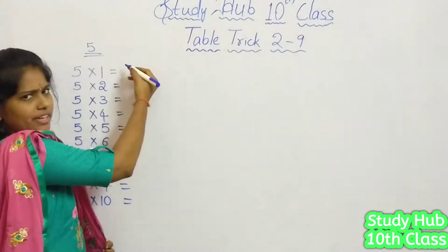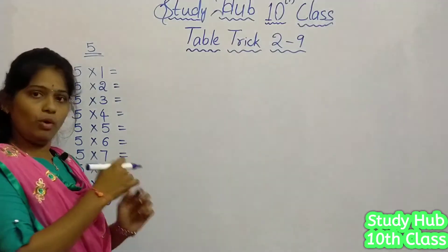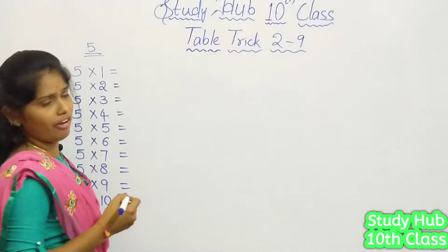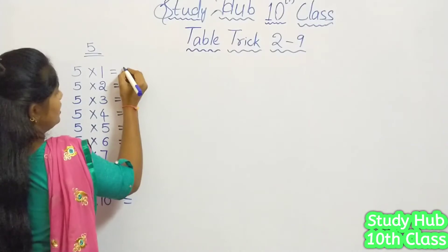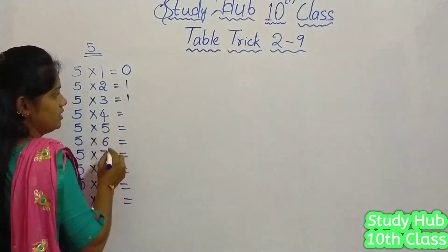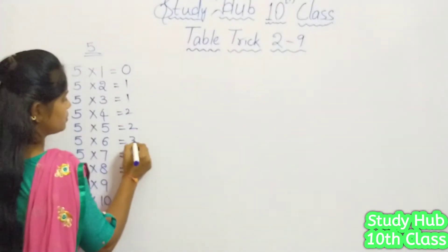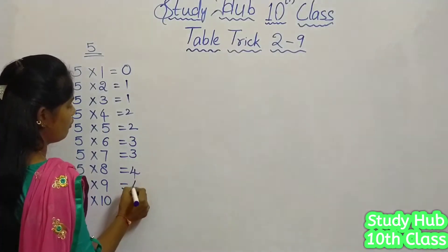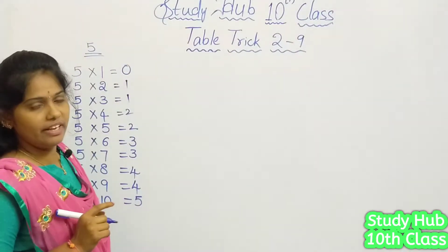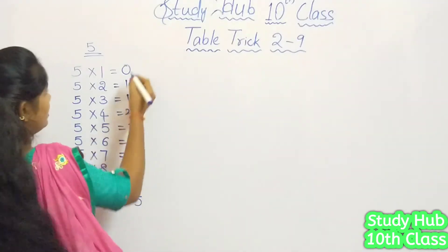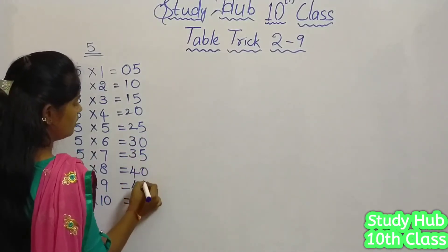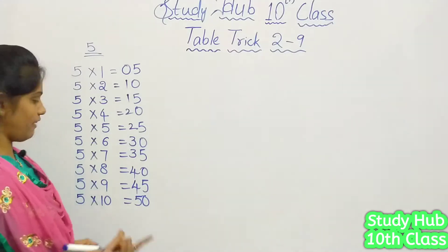For applying our simple trick on table 5, it is even simpler than the previous one. When writing the multiples of 5, firstly in the tens place you start with 0, 1, 1, 2, 2, 3, 3, 4, 4, and 5. And for the ones place we fill continuously with 5 and 0 alternating: 5, 0, 5, 0, 5, 0, 5, 0. This is the 5 times table.